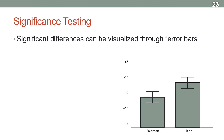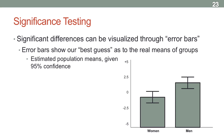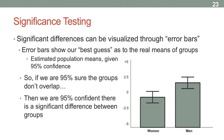Error bars represent our best guess as to where the means of these groups are in the actual population, and they're based on the 95% confidence rule. So if we're 95% sure that the real mean for women and the real mean for men in the population don't overlap, then we're 95% confident there's a significant difference between the two groups.